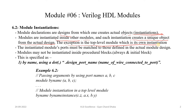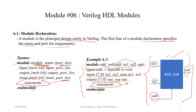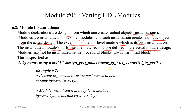In our top-level design there may be multiple sub-modules that we instantiate, but we do not need to instantiate the top-level Verilog HDL file itself — that is our top-level module file. When we simulate the design, we need to instantiate it in our testbench. The instantiated module's ports must match those defined in the actual module design — there should be no mismatch with respect to the ports. Also, modules should not be instantiated inside procedural blocks such as always or initial blocks.